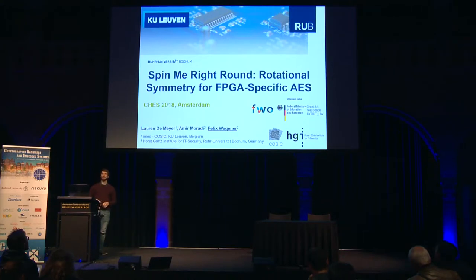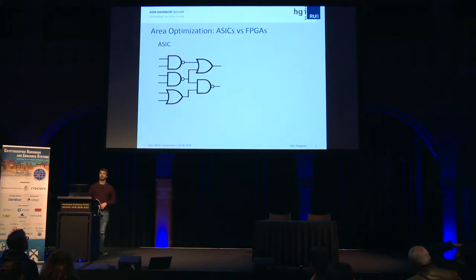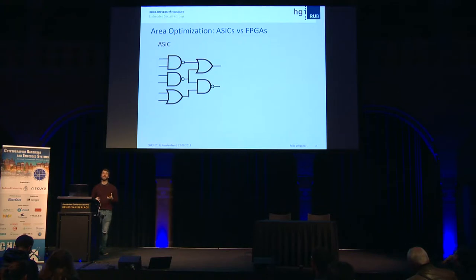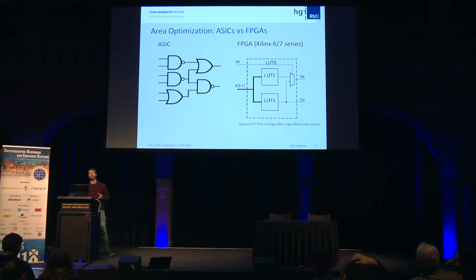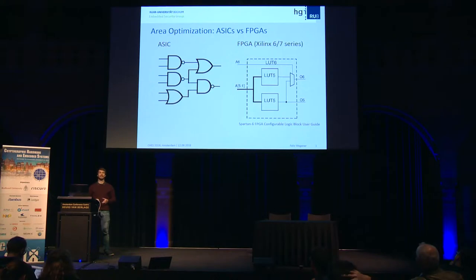FPGA-specific — what does that mean? Let's start with mapping a Boolean function to an ASIC. What you would usually consider is how it looks in terms of gates. Gates have a specific function and very few inputs. For FPGA devices, it's a completely different story. What you have here is lookup tables. Specifically, in the Xilinx 6 and 7 series we looked at, you have LUT6 tables — an arbitrary Boolean function depending on six input bits and one output bit can be represented in one LUT.